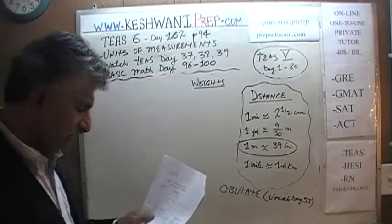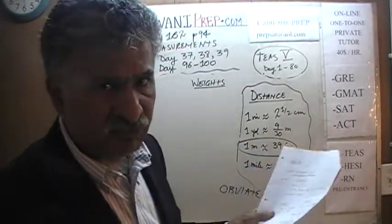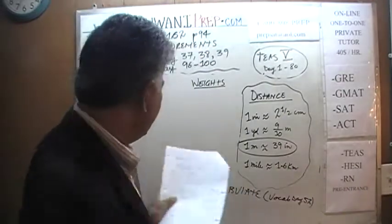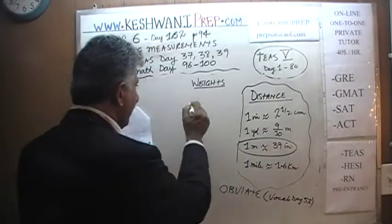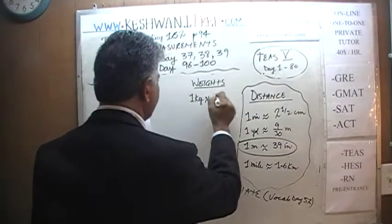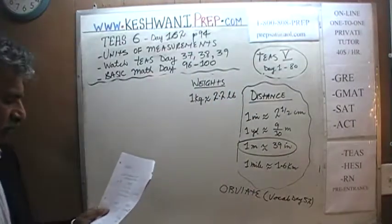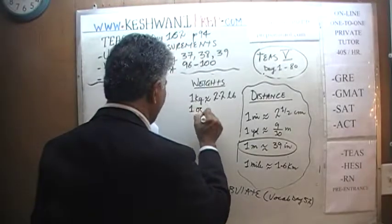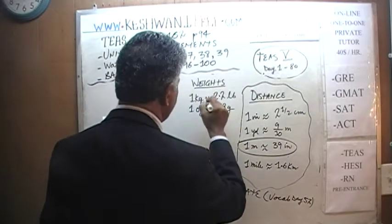There is not much to remember — it's very simple. As far as the TEAS is concerned, there are only two things you need to know by heart. First: one kilogram is approximately 2.2 pounds. Second: one ounce is approximately 28 grams. That's it.